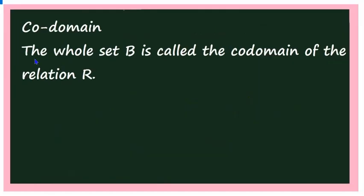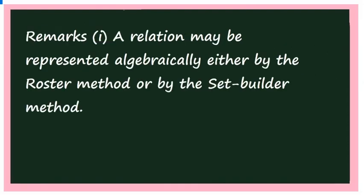The next concept is co-domain. The co-domain is very simple: the whole set B is called the co-domain of the relation R. Whatever set B is given, all elements of B form the co-domain of the relation R.